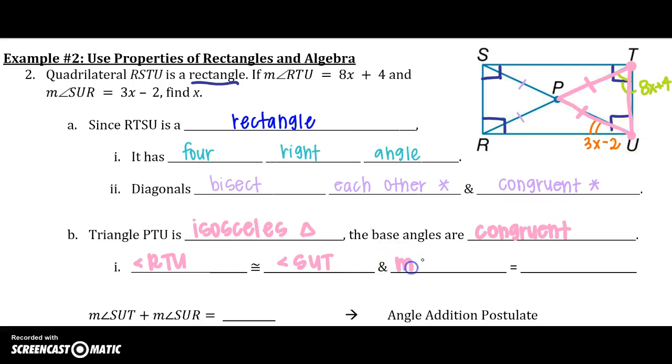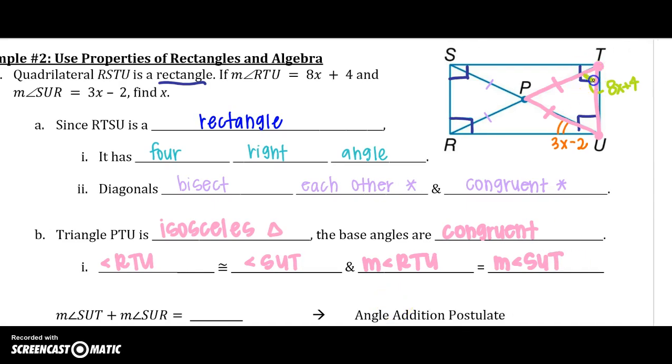So if I know that they're congruent, remember I also know they're equal. We put them equal because that helps us substitute in an equation. So if I know that this angle is congruent to this angle, I can also put this as 8X plus 4.